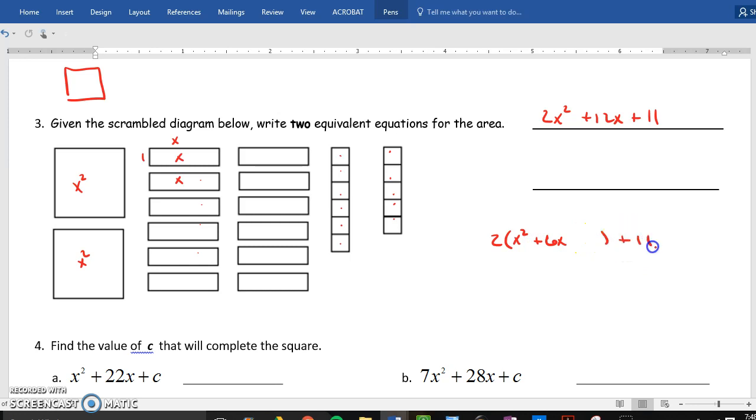And I have the 11 little ones on the outside. What you have to remember is, I'm going to take half of 6 and square it, which gives me 3 squared, which is 9. Now, I added 9 here. But if I think about it, how many do I have to subtract? 18. So, the equivalent expression is 2 times (x + 3) all squared minus 7.